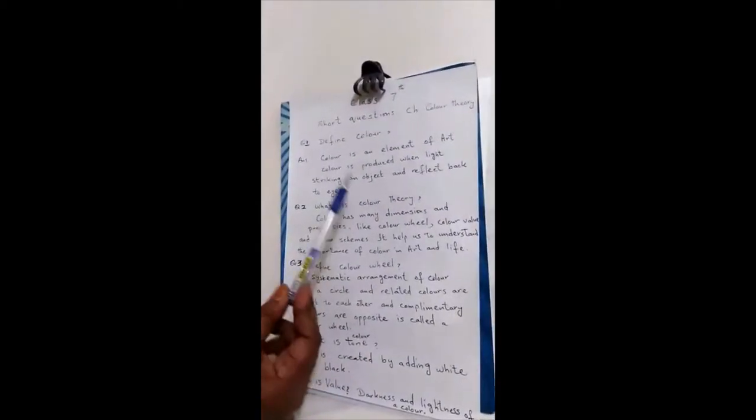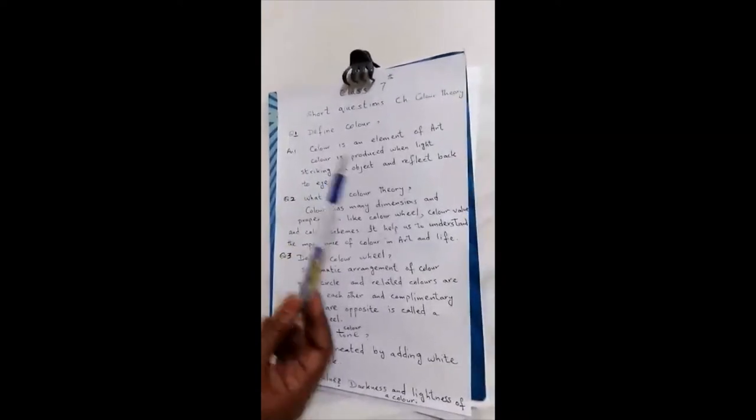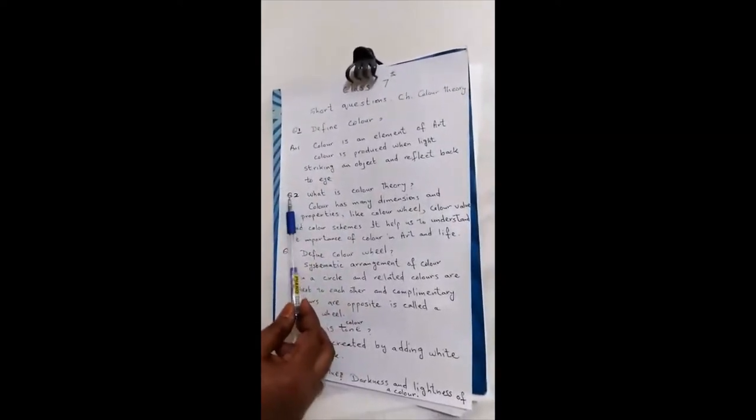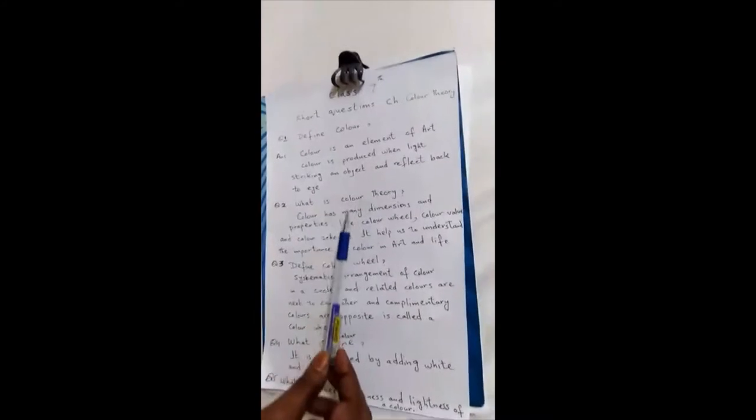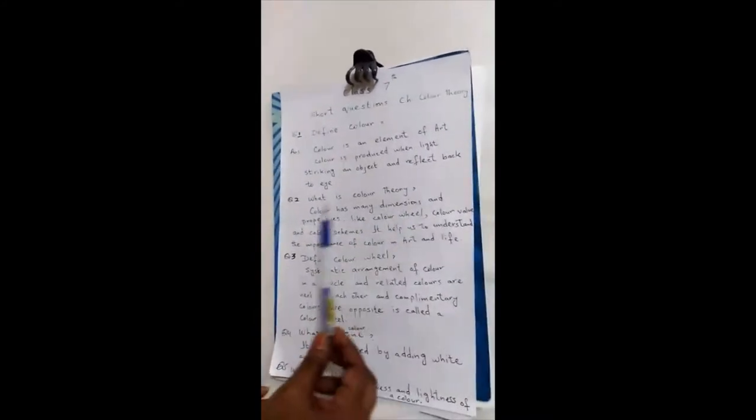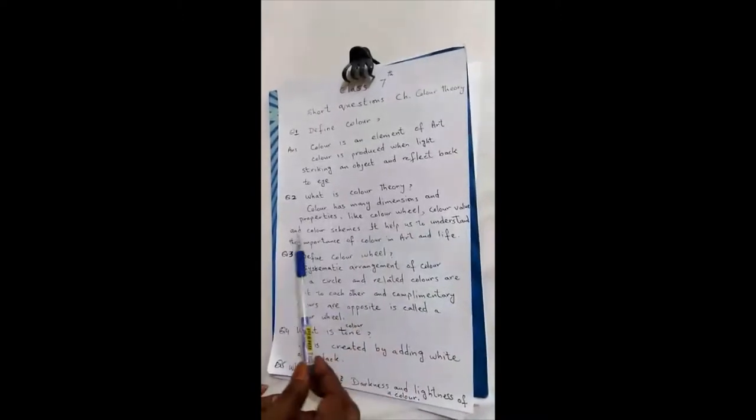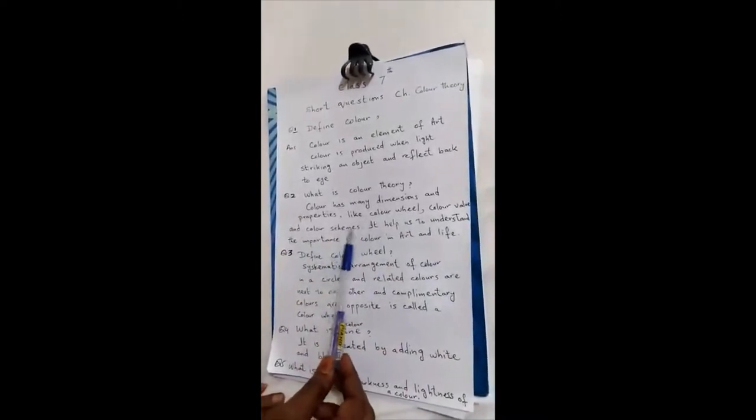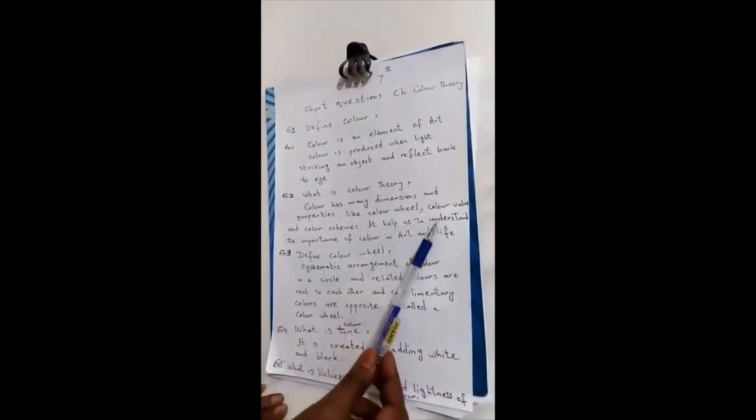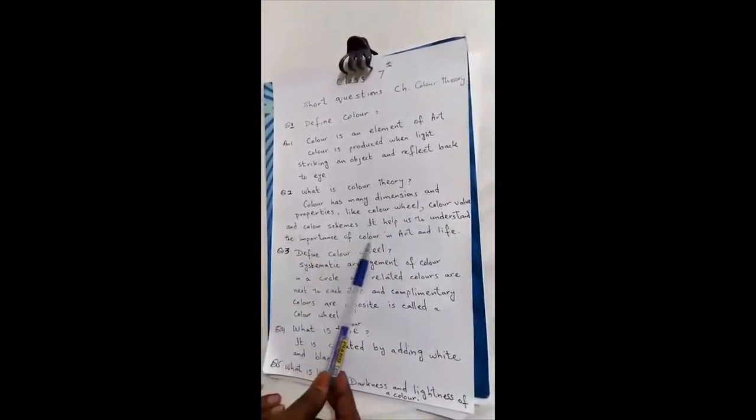I already explained each and everything about color. Second question is: what is color theory? Color has many dimensions and properties like color wheel, color value, and color schemes. It helps us to understand the importance of color in art as well as in life.